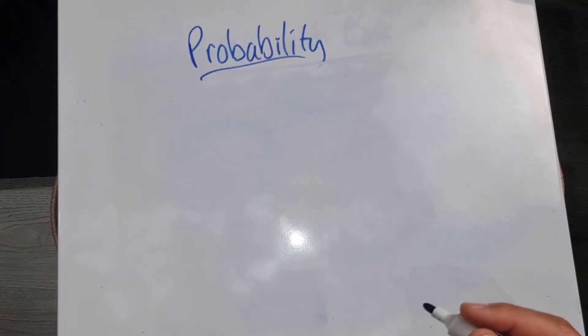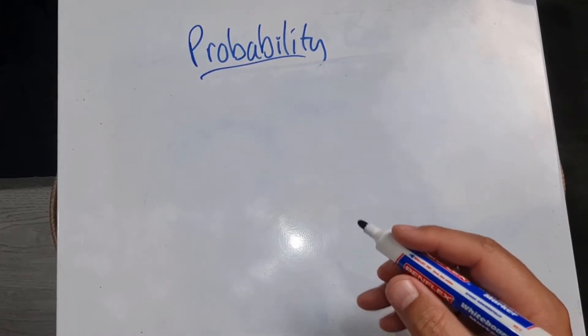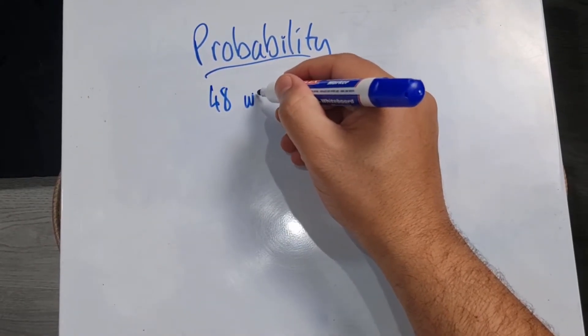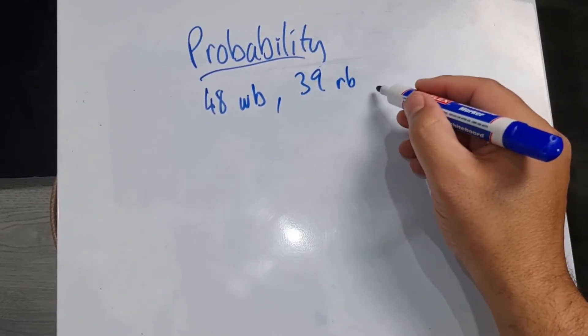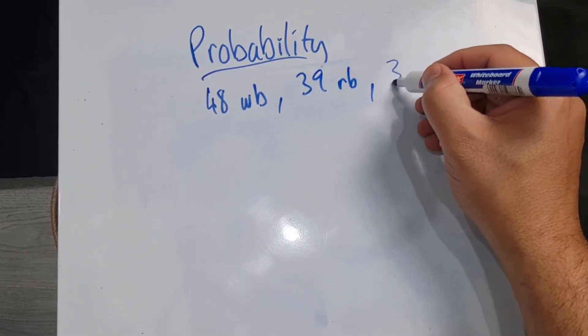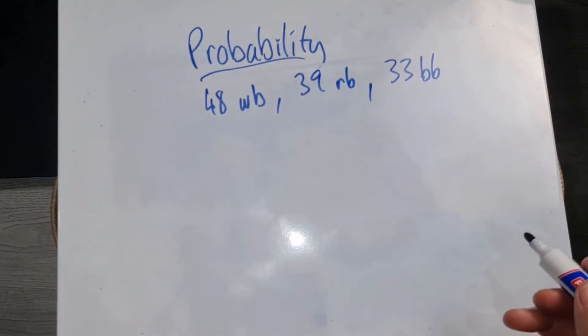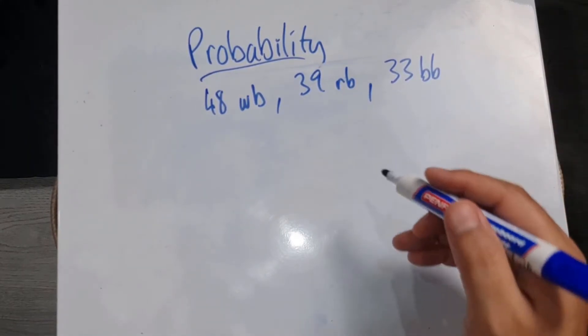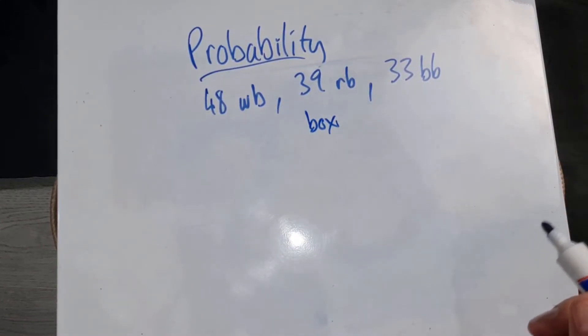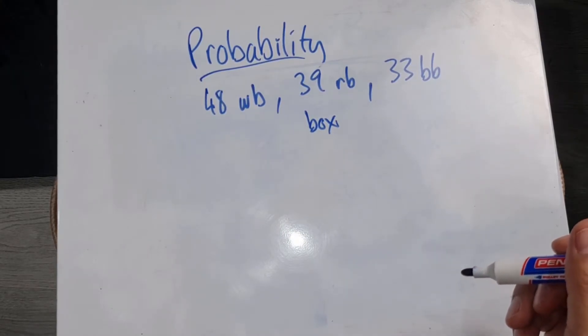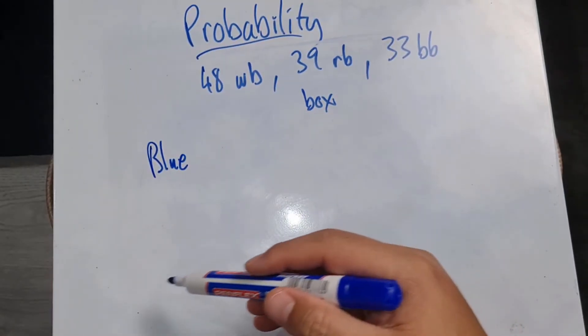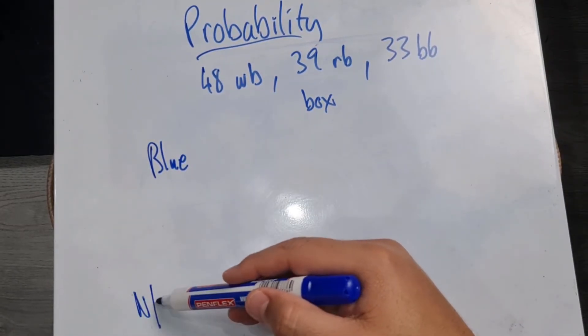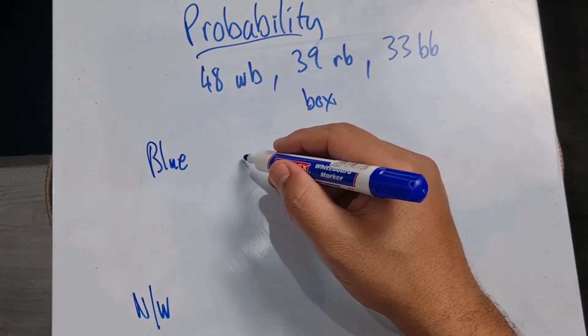Okay, so here's another example. They mentioned to us that a dressmaker has 48 white buttons, 39 red buttons, 33 blue buttons, and those are all in a box. Now, if she randomly takes a button from the box, they want us to calculate the probability that it will be blue and then the probability that it won't be white. So let's use our formula again.